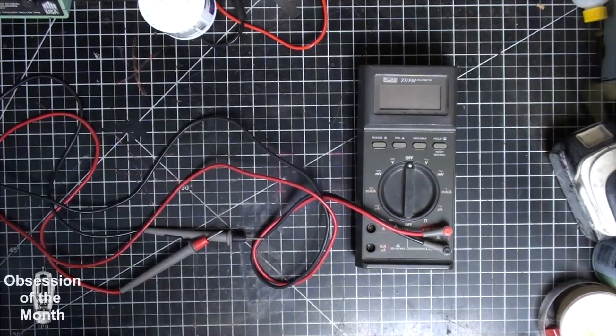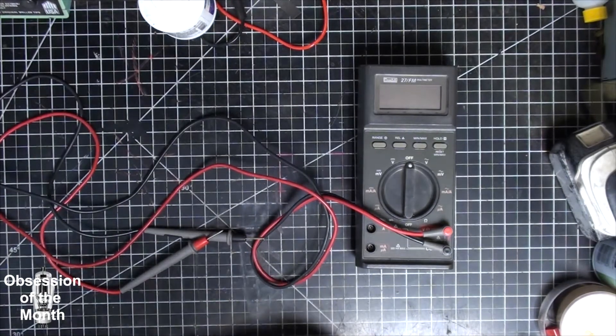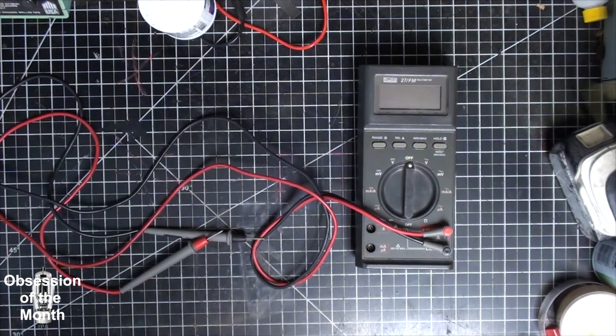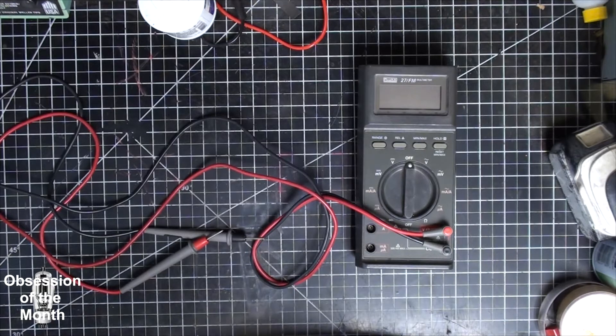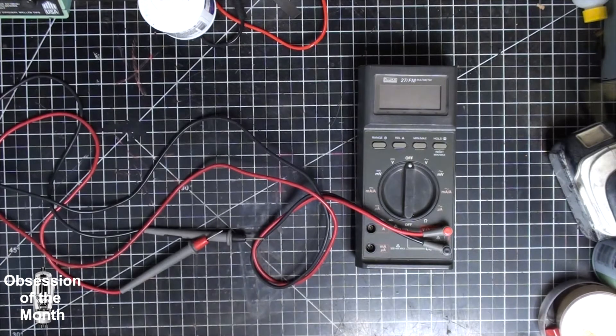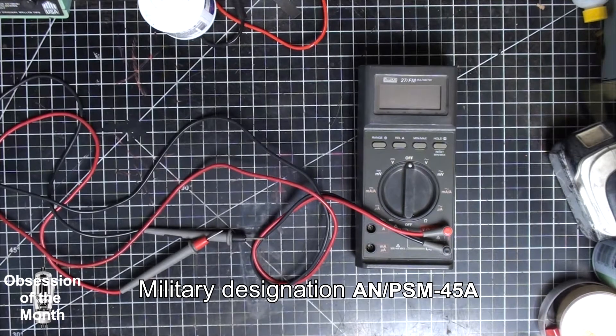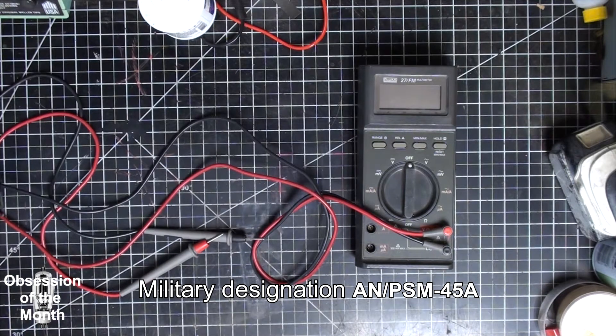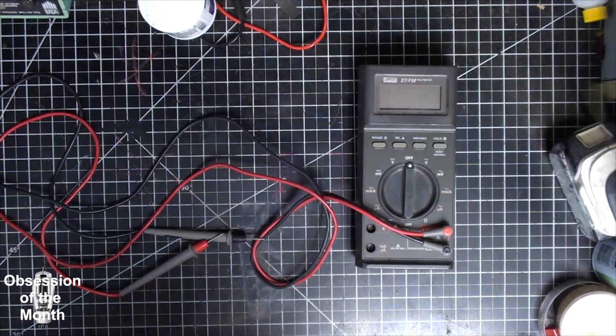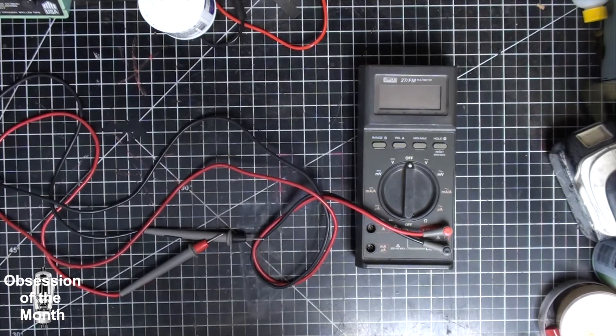Good morning! This morning we have a video about an older piece of equipment. This is a Fluke 27FM digital multimeter. This thing was made sometime in the mid to late 80s.